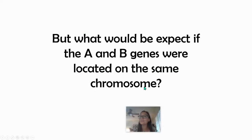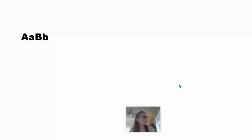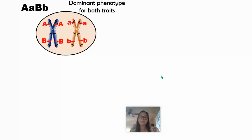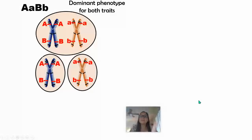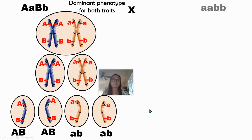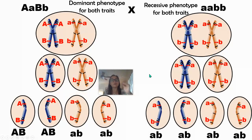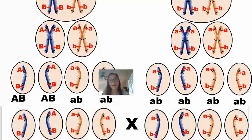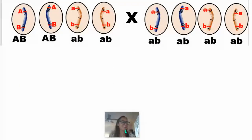But what would happen if genes were linked? What if A and B were not on separate chromosomes — what if they were inherited together? If we still have a heterozygote who is dominant for both traits, but now gene A and gene B are on the same chromosome, they are going to go together when meiosis creates haploid gametes. The two dominant alleles go together and the two recessive alleles go together.